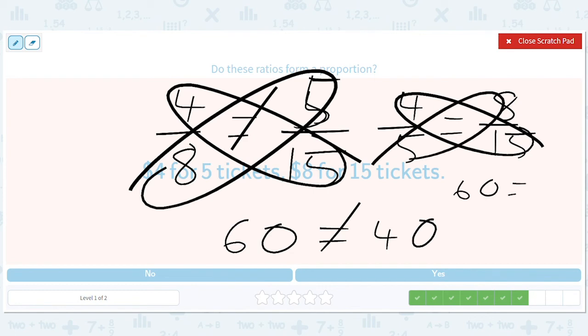All you've done is swap these two, which won't affect the cross multiplication. So no, 60 doesn't equal 40.